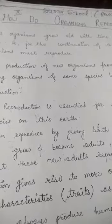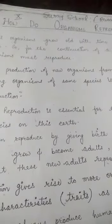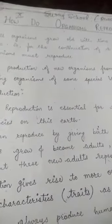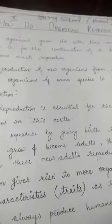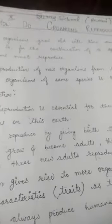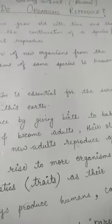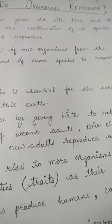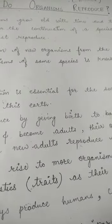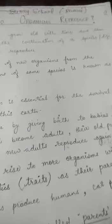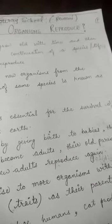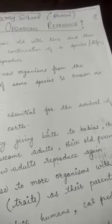How do organisms reproduce? Students, first of all, what do you mean by reproduction? The production of new organisms from existing organisms from the same species is known as reproduction. And the second definition: reproduction is essential for the survival of a species on this earth.